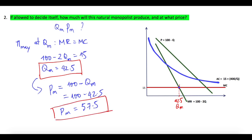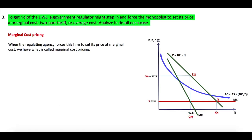In the graph, line up from the intersection point up to the demand curve — the corresponding price is Pm equal to 57.5. This point is the equilibrium under monopoly.